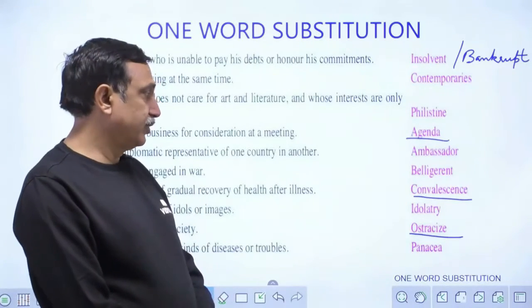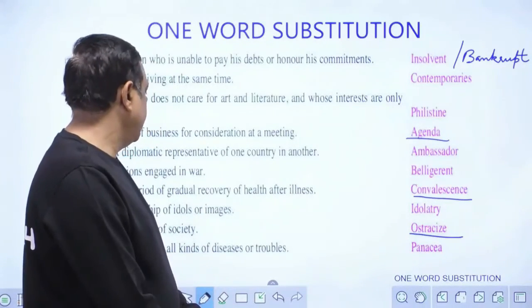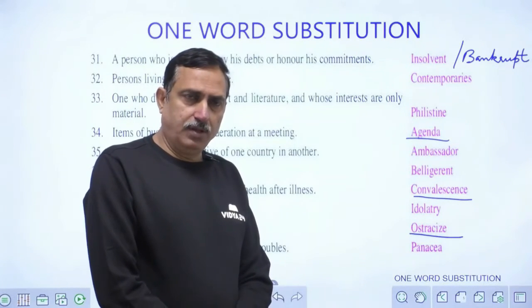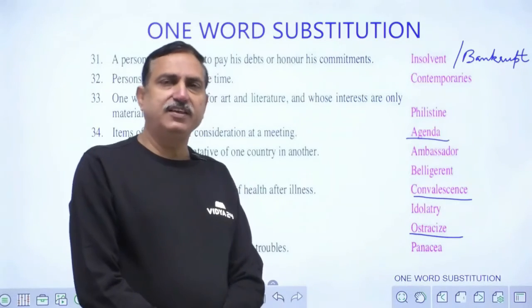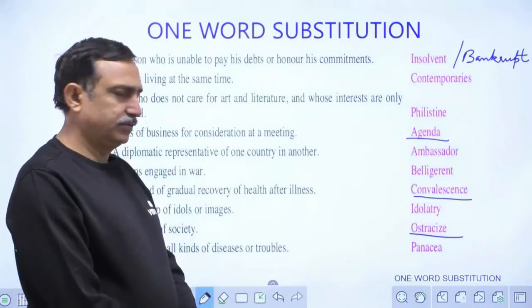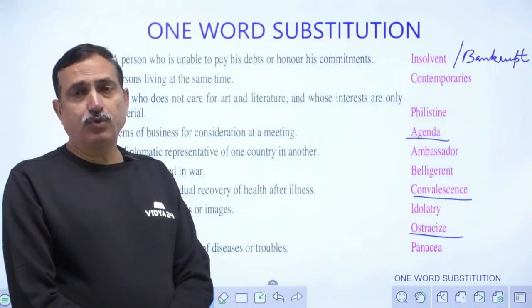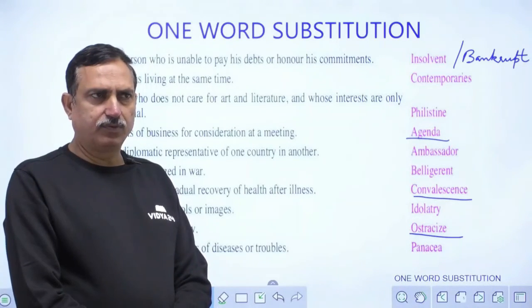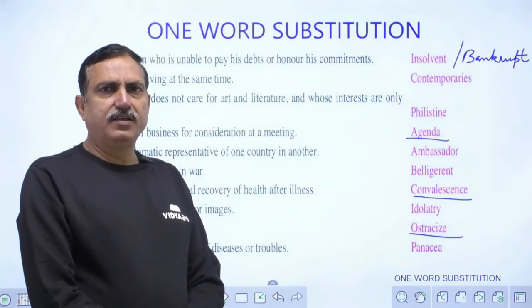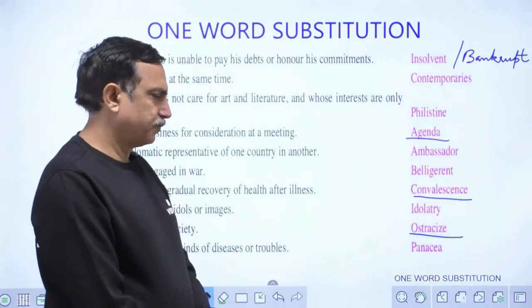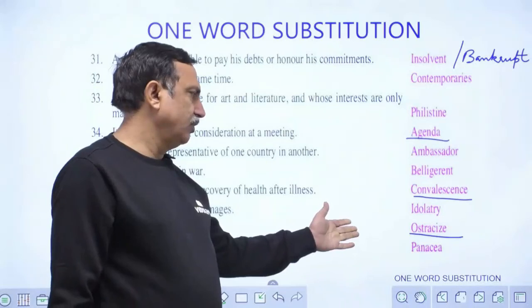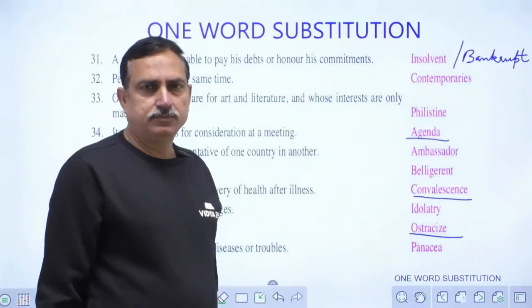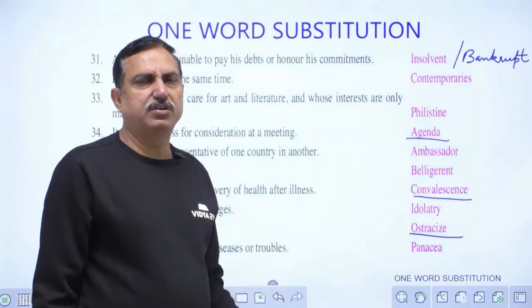A remedy for all kinds of diseases or troubles is called a panacea. Antibiotics are known as the panacea in the medical world — they cure diseases at a very fast pace. In Hindi, there is a word 'ramban' for this. Many antibiotics like terramycin affect infections very fast and are considered panacea.